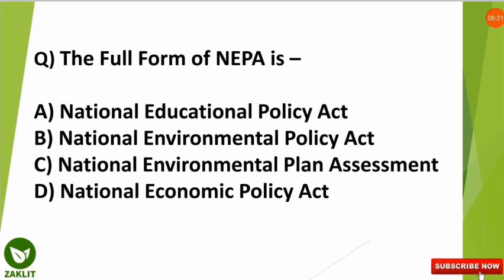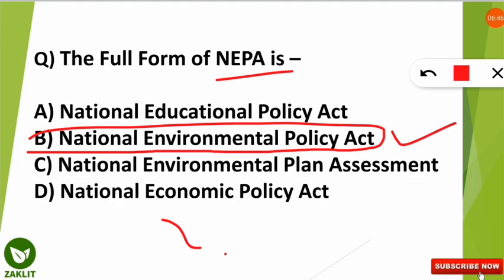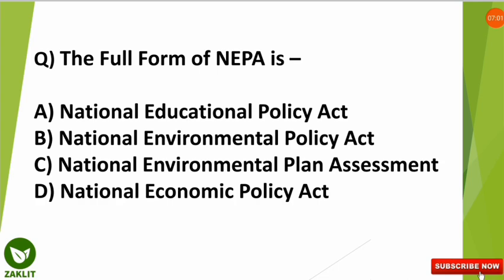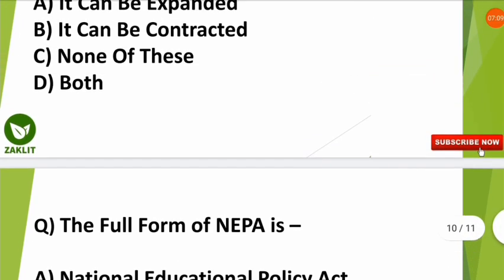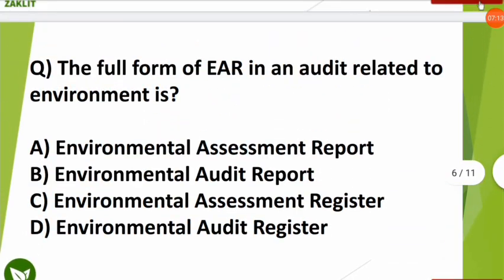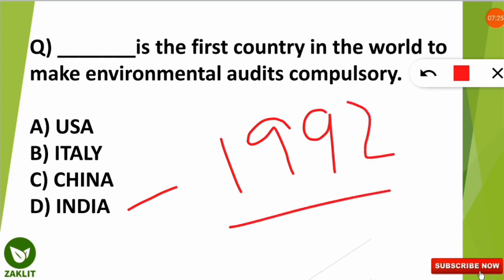The next question is about the full form of NEPA. The correct option is B — National Environmental Policy Act, which was enacted in the USA in the year 1970. Also note that in 1992, the Government of India proposed that environmental audits should be compulsory for all industries to provide environmental audit reports — making India the first country to mandate this.